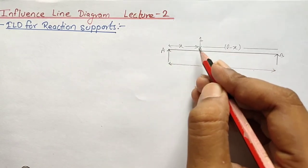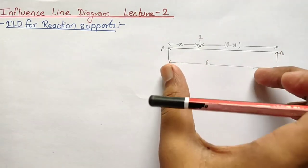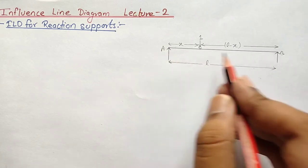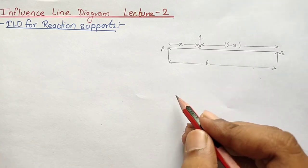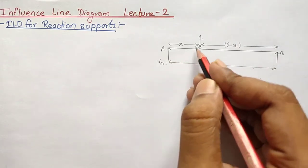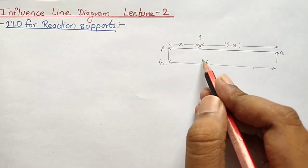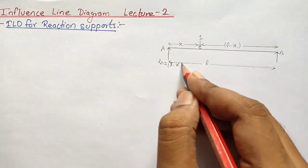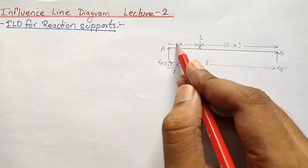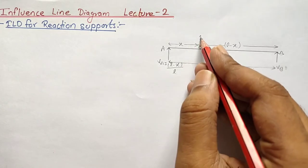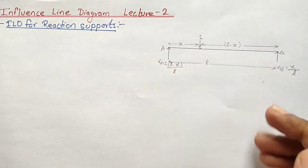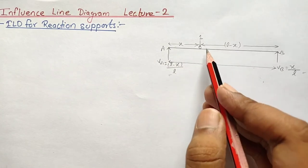After setting up the span, using the concept from solid mechanics or strength of materials for finding the reaction at supports A and B, we can see that VA equals load multiplied by the opposite span divided by the whole span. So VA equals (L minus x) upon L. Similarly, VB equals load times the opposite span divided by the whole span, giving VB equals x divided by L.